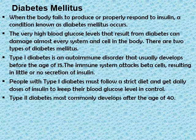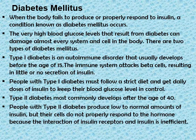On the other hand, type 2 diabetes most commonly develops after the age of 40. In type 2 diabetes, people produce low to normal amounts of insulin, but their cells do not properly respond to the hormone because the interaction of insulin receptors and insulin is inefficient.